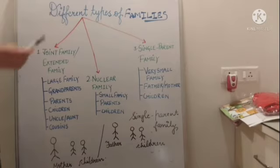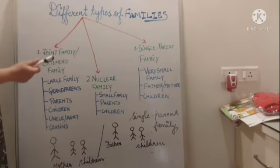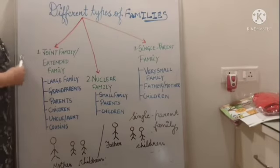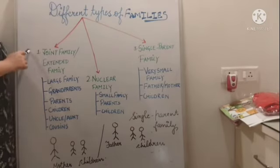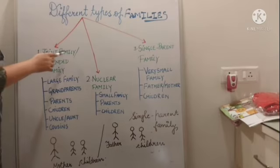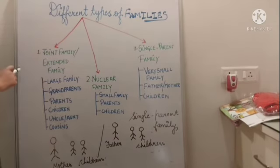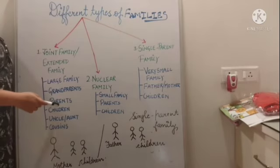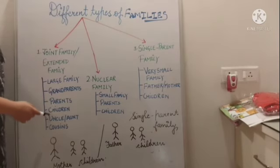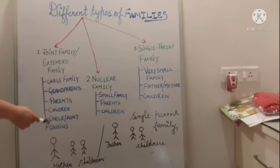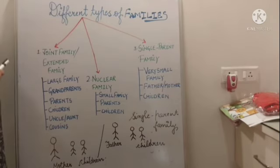I hope you understood the different types of families. Let me just make it clear one more time. First one is joint family, also known as extended family — it is also known as large family. In such type of families, grandparents, parents, children, uncle, aunt and cousins — they live under the same roof.